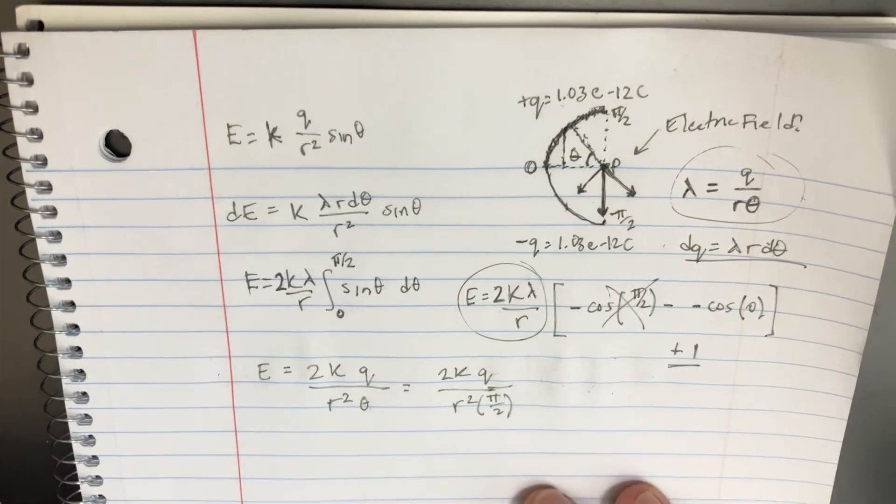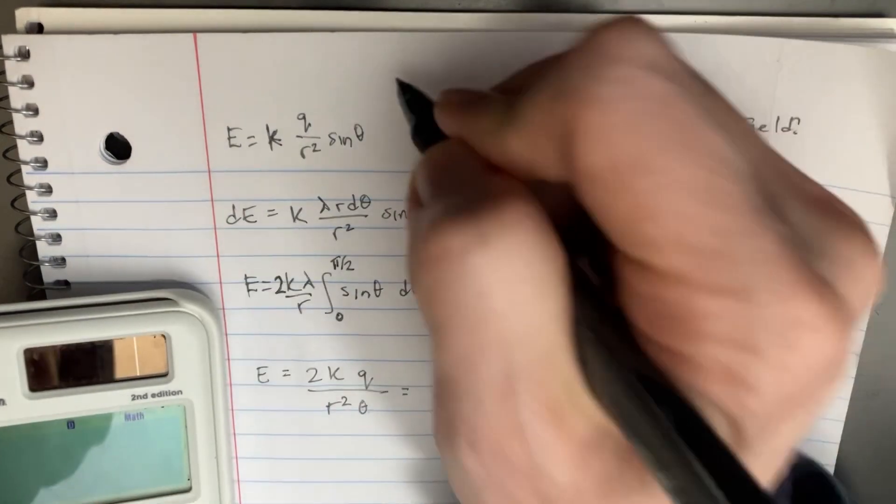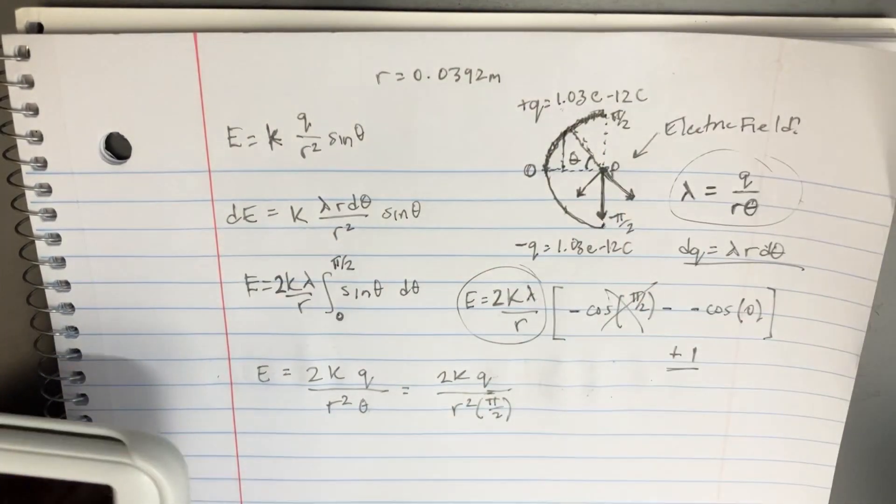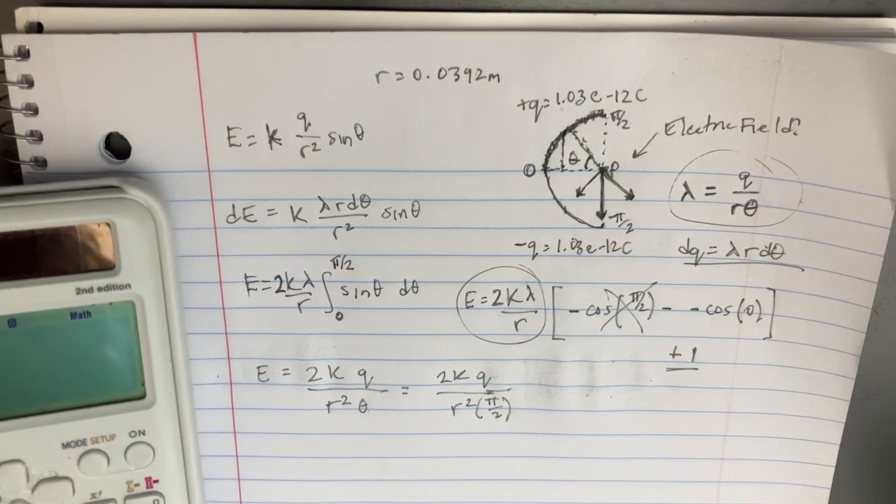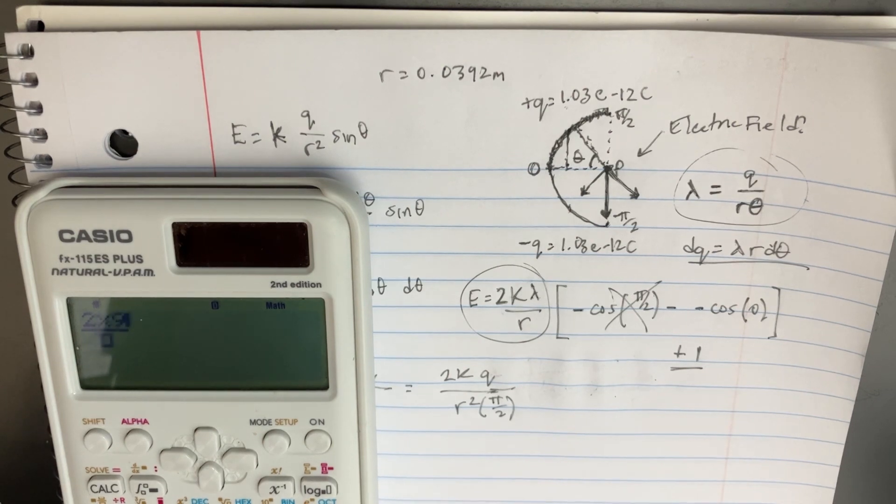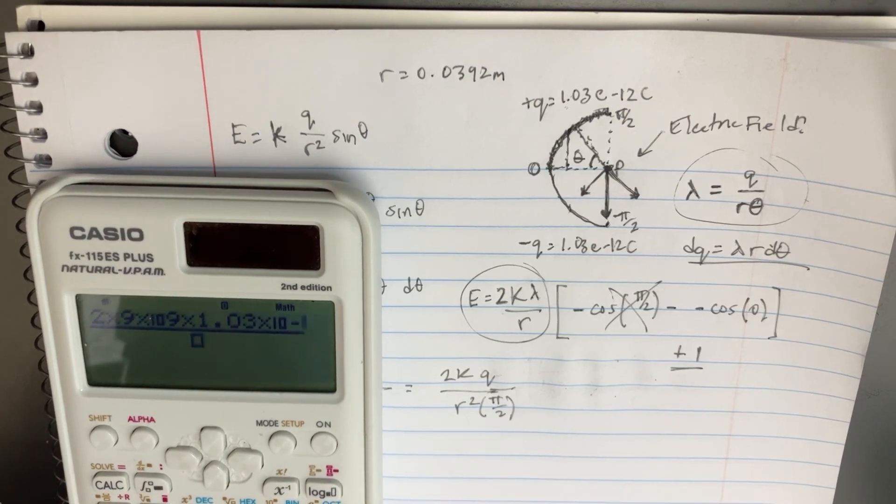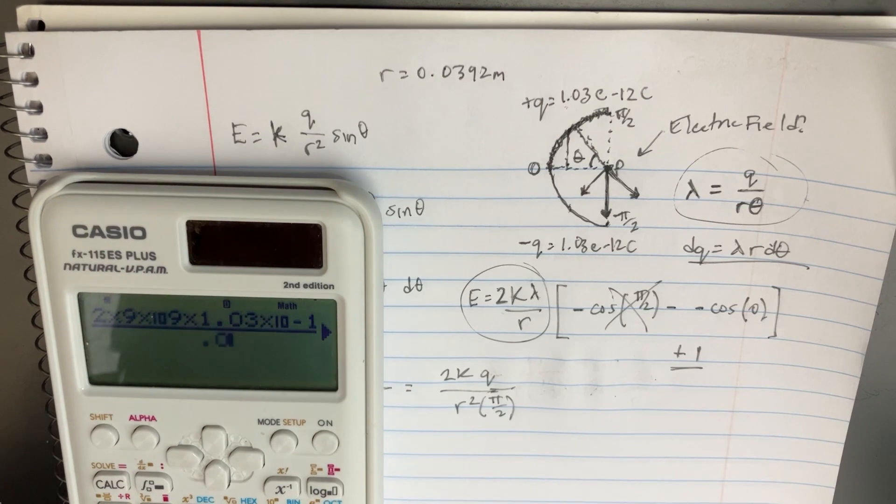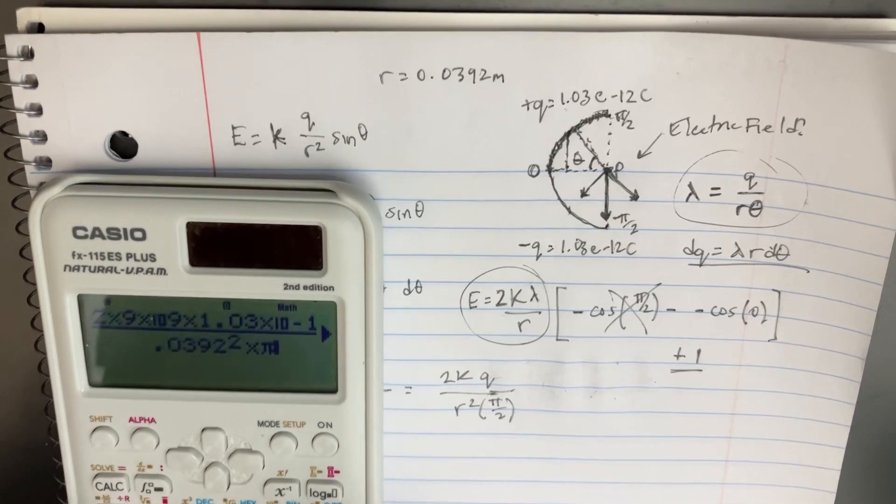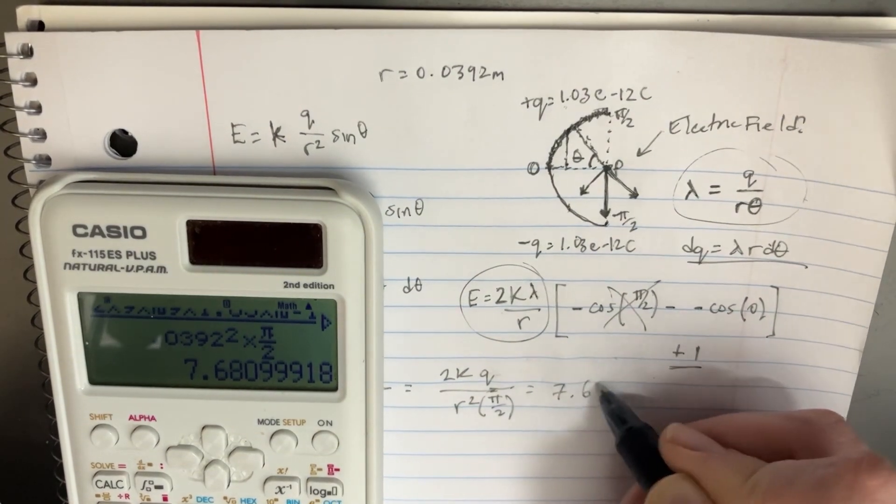And then I think we could start to plug this all into our calculator and get an answer. Because we know that R is actually given to us, R is 0.0392. That's the length of the radius. So we have 2 times K is going to be 9 times Q, which is supposed to be 1.03e to negative 12. And then we're going to divide that by the R squared, which is 0.0392 squared, and then times pi over two. And yeah, so we get the answer. 7.68 coulombs.